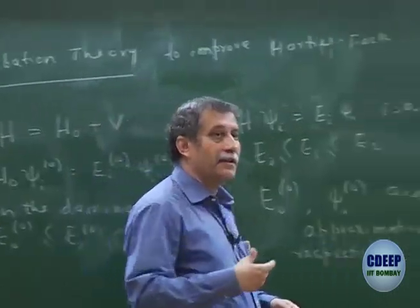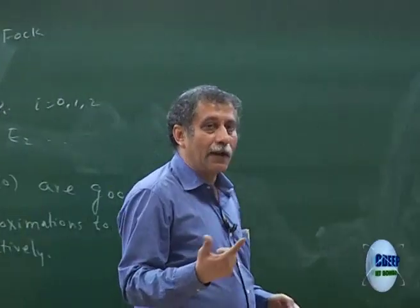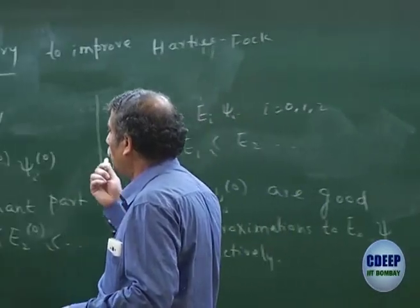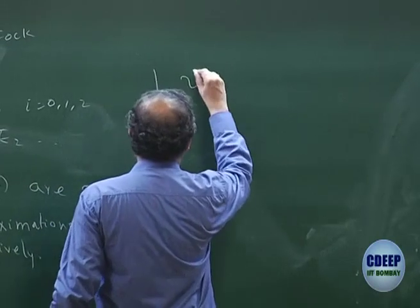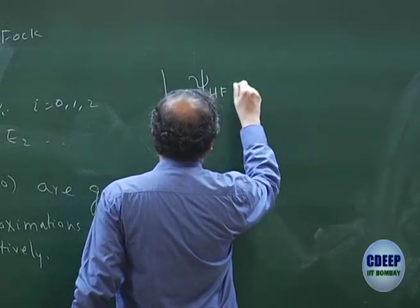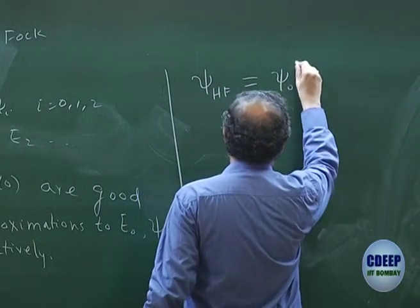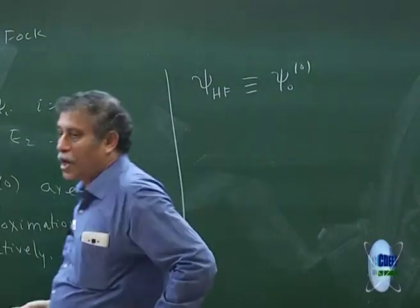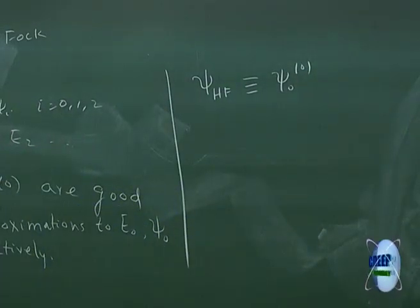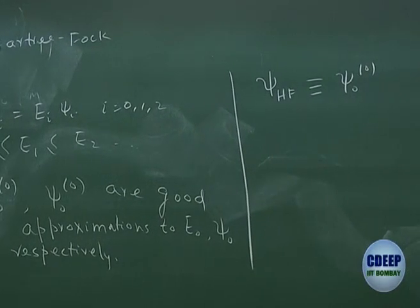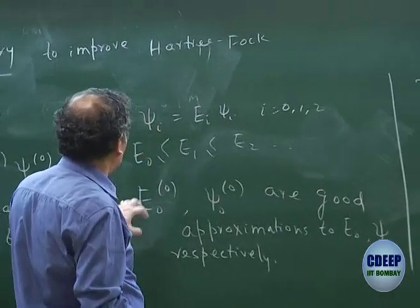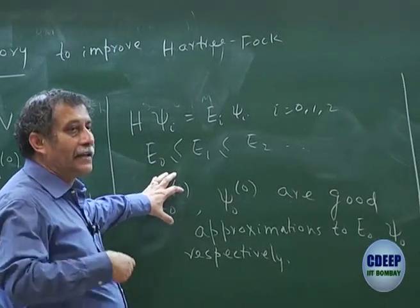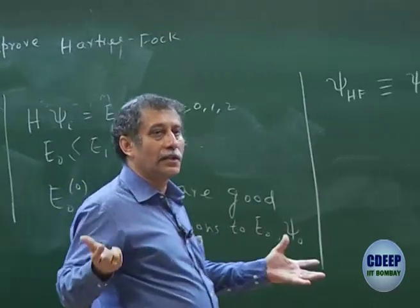I am now asking the reverse question. Instead of first finding H₀, I already know that there is a good approximation to ψ₀ which exists. I already know that ψ_HF can become my ψ₀⁰, because it is a good approximation to the wave function. Although the single determinant is not exact, it is a good approximation, and from our experience we know that E₀⁰ is 95 to 97 percent of the total E₀.